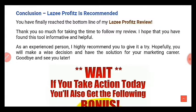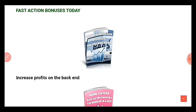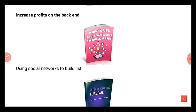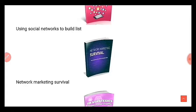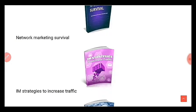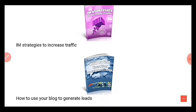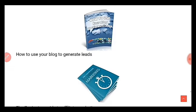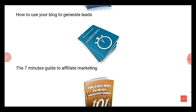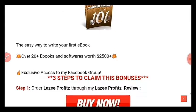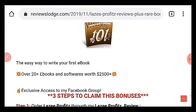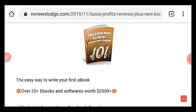I also have bonuses for you if you get the software through my link. First, you get an ebook to help you increase your profits on the back end. I'll give you an ebook on how to use social networks to build a list, internet marketing strategies to increase traffic, how to use your blog to generate leads, a seven-minute guide to affiliate marketing, the easy way to write your first ebook, and over 20 ebooks worth about $2,500.